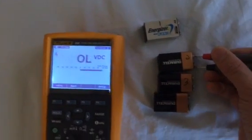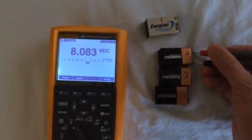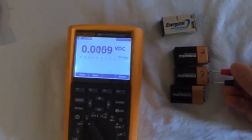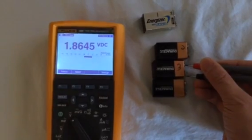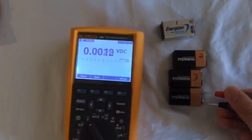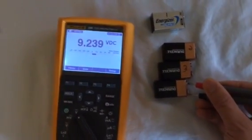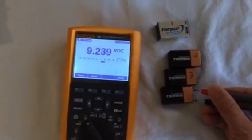Now the second battery, 8.083 volts. Third battery, 1.86 volts. And fourth battery, 9.239 volts.